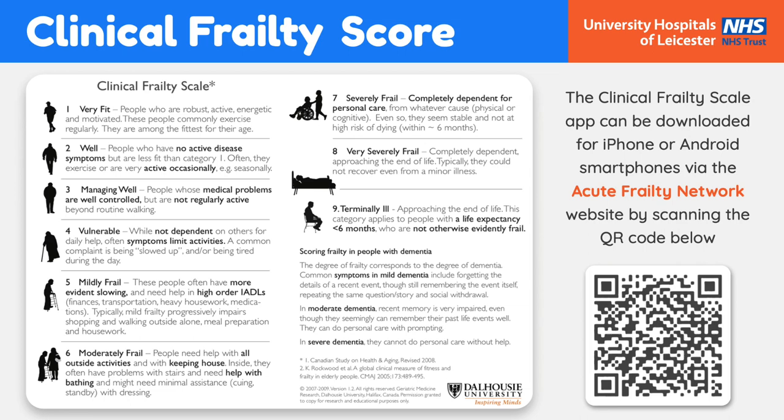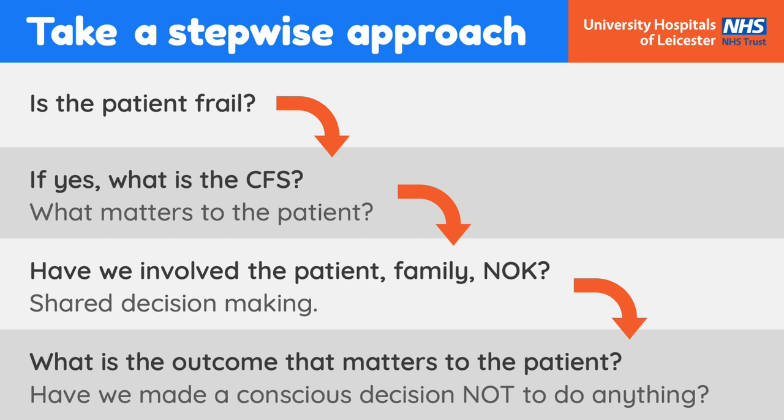Putting this all together in a stepwise approach. Step one: is the patient frail? If the answer is no, focus on the problem at hand just as you would with any patient. If the answer is yes, determine the CFS — use the app to help you accurately grade this, bearing in mind this is giving you context to what your patient was like two weeks ago. Step two: what does the patient want? That is, what are their wishes or special requests? For example, some patients would want to be treated at home where possible.